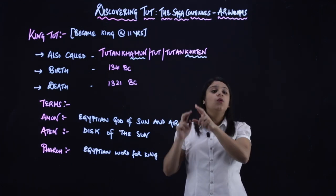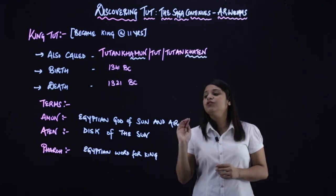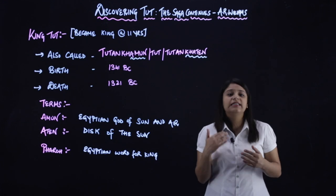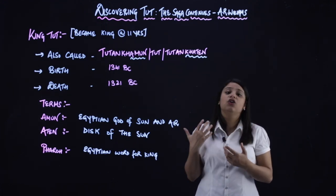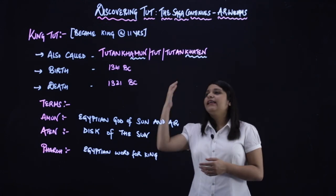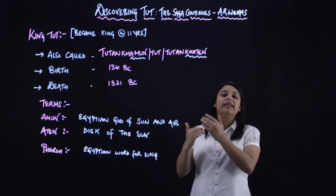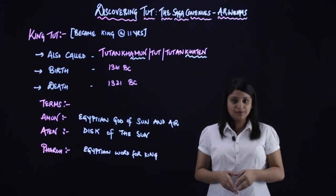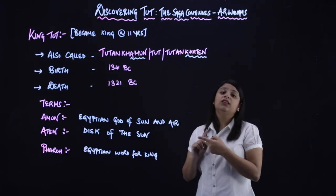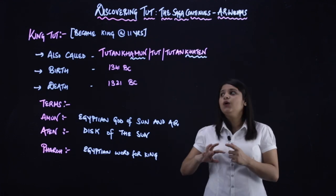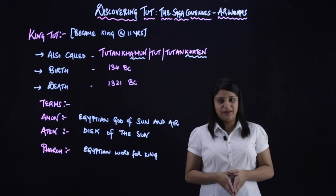Because these ending words itself have their meaning. Amun means it is an Egyptian god of sun and air. And Aten means disc of the sun. Now, because he worshipped these two, that is why in his name these two names are attached. Now, he was born in 1341 BC and he died in 1321 BC. So this is a minute detail that you need to keep in mind when we cover this chapter.